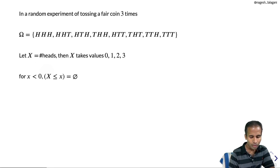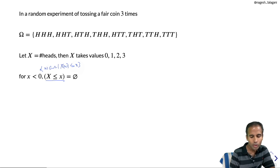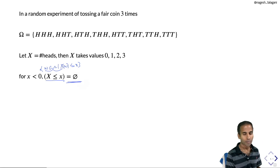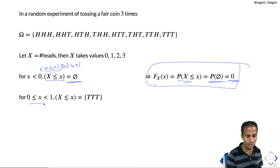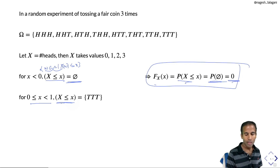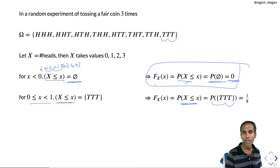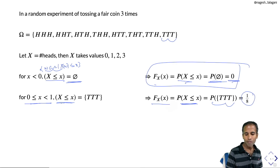For x less than 0, the event {X ≤ x} is empty since the number of heads is never negative, so F(x) = 0. For 0 ≤ x < 1, the event {X ≤ x} consists only of the outcome (tail, tail, tail), so the probability is 1/8. For 1 ≤ x < 2, the event consists of 4 outcomes, giving probability 4/8 = 1/2. For 2 ≤ x < 3, all outcomes except (all heads) are included — 7 outcomes — giving probability 7/8.